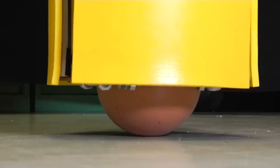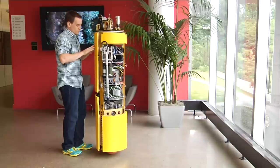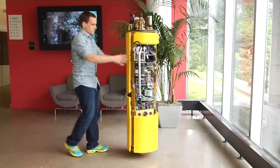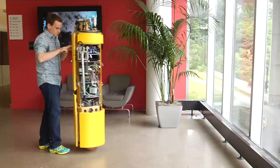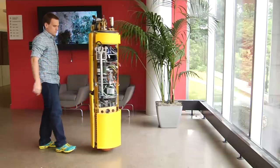So when someone pushes the ballbot, it naturally leans away from the direction of the push. And at that point, the balancing controller takes over and accelerates the ball in the direction of lean to keep it from falling over. The result is that this 75-kilogram machine can be easily pushed around with a pinky finger.